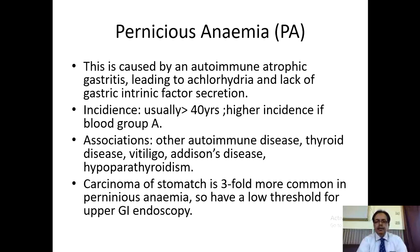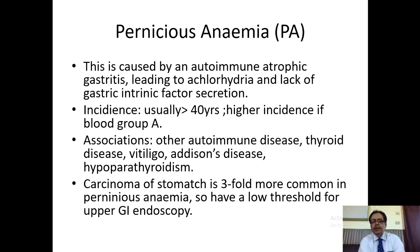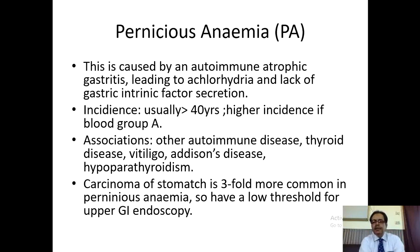Pernicious anemia is an autoimmune disorder in which there is atrophic gastritis, leading to achlorhydria and deficiency of intrinsic factor secretion. The absence of HCl and deficiency of intrinsic factor lead to deficiency of B12 absorbed in the terminal ileum, as IF will not bind to B12. Pernicious anemia is found in patients above 40 years of age. Incidence is higher if the patient has blood group A. Associated autoimmune disorders include diabetes mellitus, Grave's disease, thyroid disease, vitiligo, Addison's disease and hypoparathyroidism.